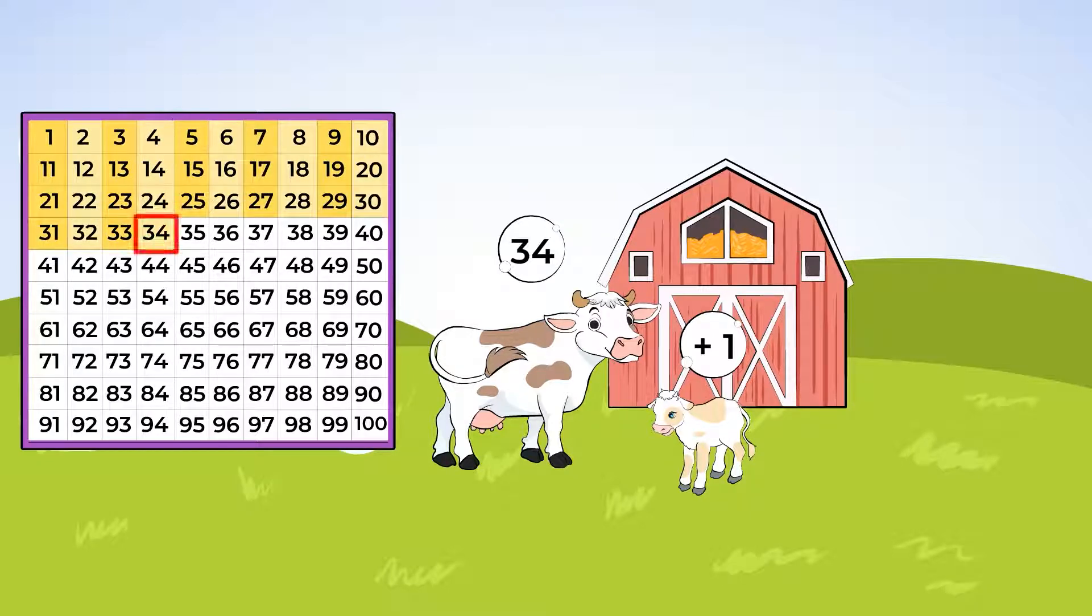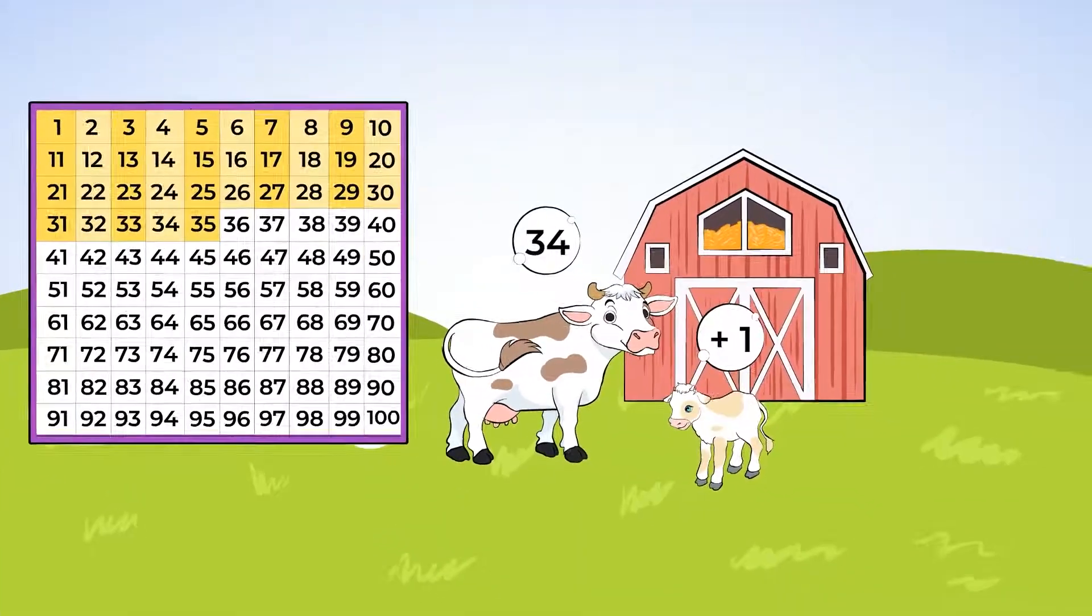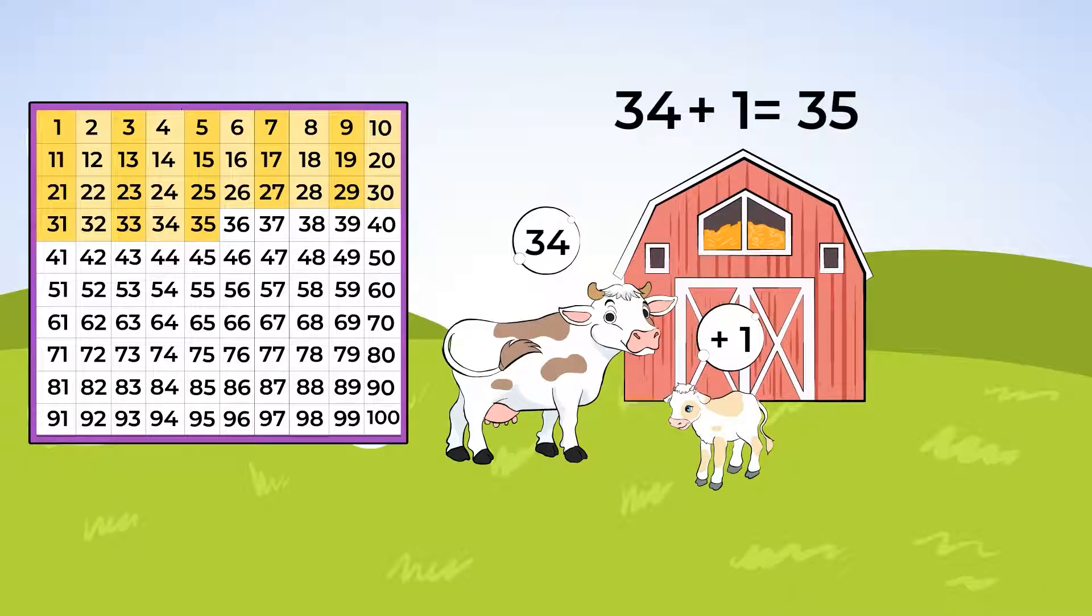Looking at the chart, here is 34. Now when Farmer Ben counted, he had 34 cows. Then one cow had a baby. Now there's one more cow. And so we need to count one more than 34. And what comes after 34? 35. 35 comes after 34. 35 is one more than 34. When Farmer Ben counted his cows, he had 34. But then when we counted one more for the baby cow, we found out that he now has 35 cows. Great job!